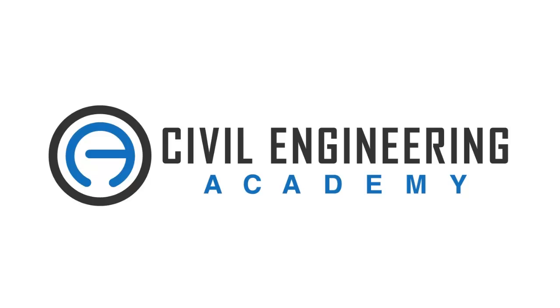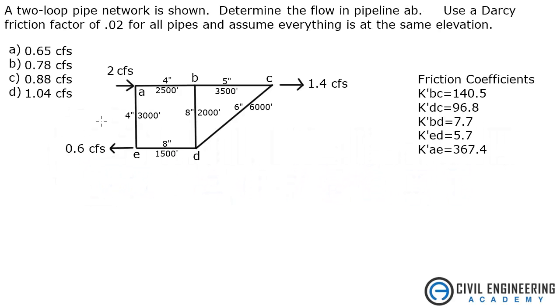Welcome to Civil Engineering Academy. Today we're solving a problem for water resources. It states a two-loop pipe network is shown. Determine the flow in pipeline AB. Use a Darcy friction factor of 0.02 for all pipes and assume everything is at the same elevation. We're asked to solve what the flow rate is in AB — we're given all these flow rates, pipe dimensions, and friction coefficients.